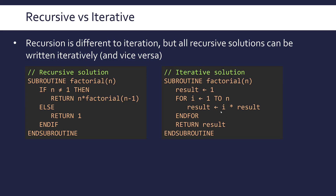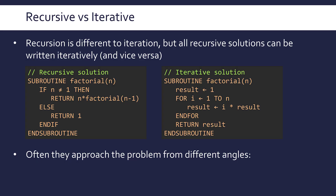Whereas if you showed the iterative code to a mathematician, they might not fully understand what's going on, whereas you'd hope they would at least get the sense of what you're doing on the left-hand side. But ultimately, the difference is they're approaching a problem from different angles.